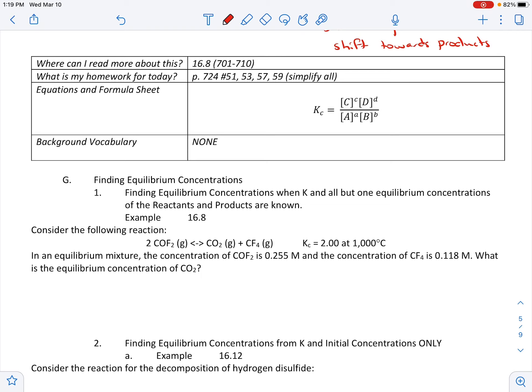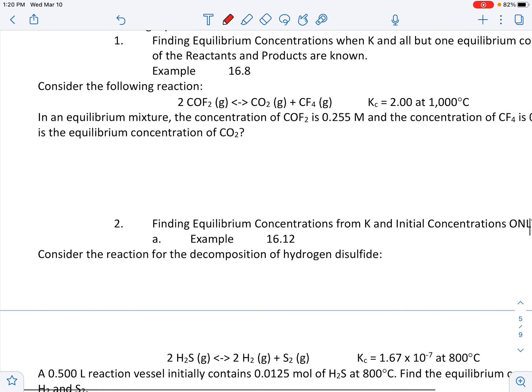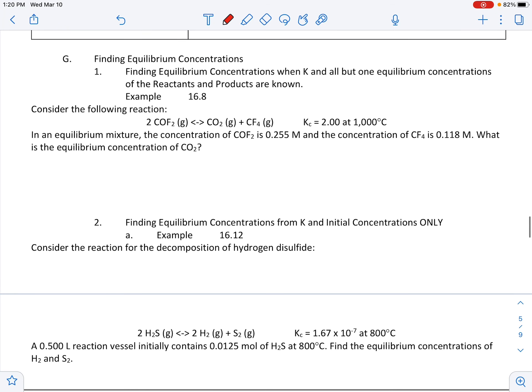Jumping into this first one, we're going to do examples because to me that's the best way to knock these out. Finding equilibrium concentrations when K and all but one equilibrium concentration of the reactants and products are known. We have our reaction here. We have 2COF2 goes to CO2 and CF4. This becomes a very simple substitution calculation. This is the easier of the two.